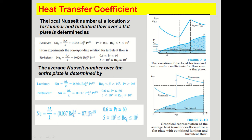The variation of the local friction and heat transfer coefficient for flow over a flat plate shows that in laminar flow both coefficients decrease with distance, and in the transition and turbulent region they increase up to some value. The average Nusselt number over the entire plate is determined by replacing x with L: Nu = h̄L/k = 0.664 · Re_L^0.5 · Pr^(1/3), valid when Re_L < 5 × 10⁵ and Pr > 0.6. This formula is used for laminar flow only.